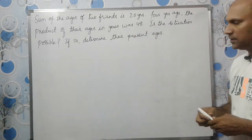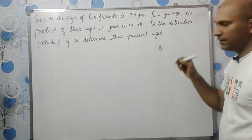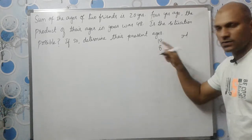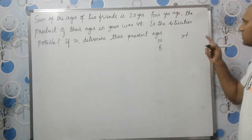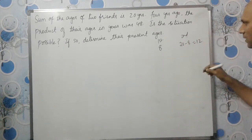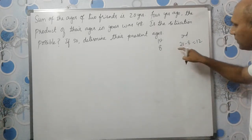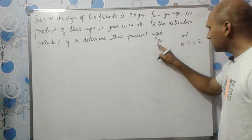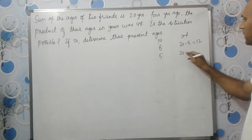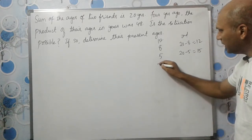For example, if one friend is 8 years — this is the first friend and this is the second friend. If the first friend's age is 8 years, the second friend's age will be 20 minus 8, which is 12, because 8 and 12 give us 20. Similarly, if the first friend's age is 5, the second friend's age will be 20 minus 5, which gives us 15.